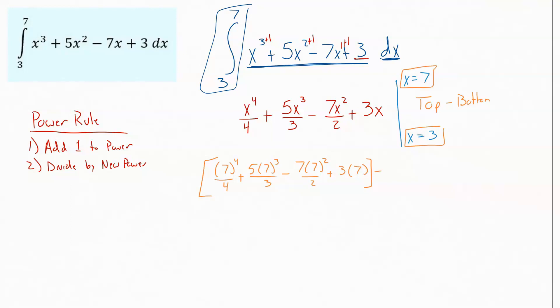And then subtracting off of that, we're going to plug 3 into that exact same equation. So we'll get 3 to the 4th over 4, plus 5 times 3 to the 3rd over 3, minus 7 times 3 squared over 2, and then plus 3 times 3.